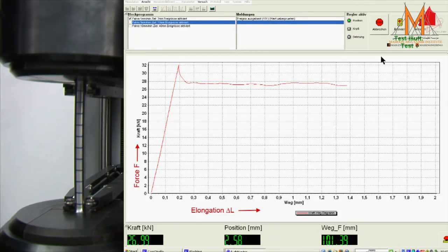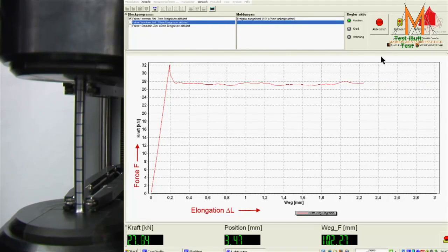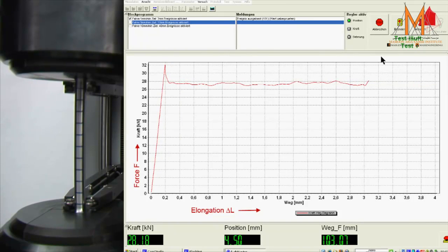In the next stage of the tensile test, an almost constant force level with slight fluctuations occurs. This phenomenon is called the Lüders effect. After a certain strain, known as the Lüders strain, the force increases again.